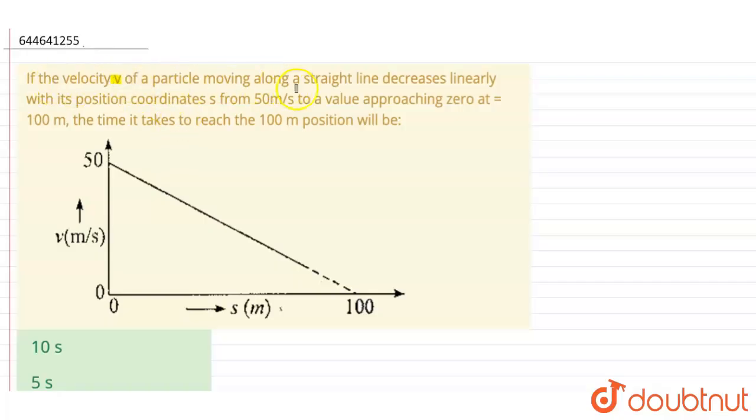The velocity v of the particle moving along a straight line decreases linearly with its position coordinate from 50 meter per second to a value approaching zero at 100 meter. The time it takes to reach the 100 meter position will be... So basically we have to find in this question time, and we have given a diagram, a graph which is between velocity and the distance.